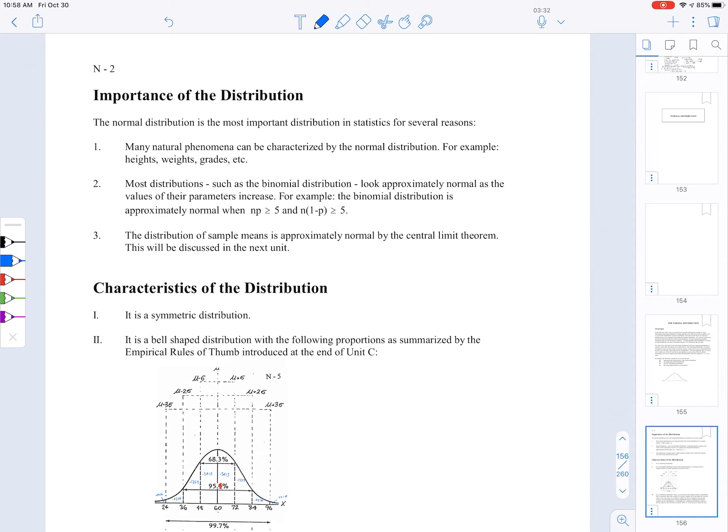And number three, this is the most important one actually, so I'm going to put a star beside this one. It's not going to make sense at this point, but it says that the distribution of sample means is approximately normally distributed by the central limit theorem. What's that all about? Well, we'll learn about that at the beginning of Unit E, which is the next unit.